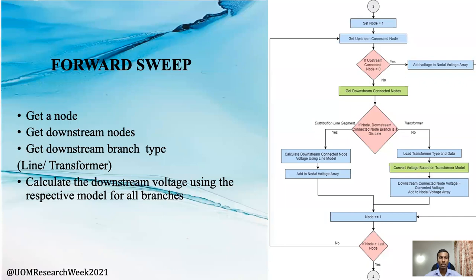In the forward sweep, we get a node and retrieve all downstream nodes. Then we get all downstream branch types and calculate the downstream voltage using the respective model for all branches.